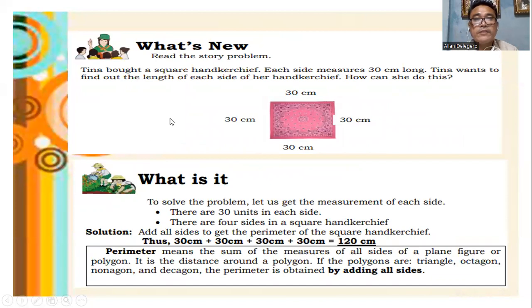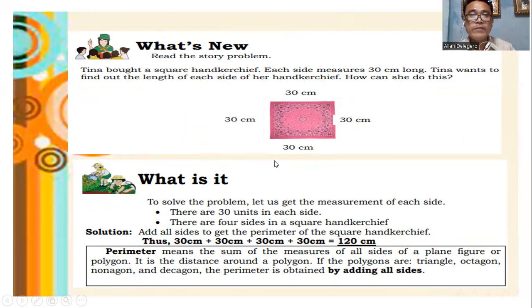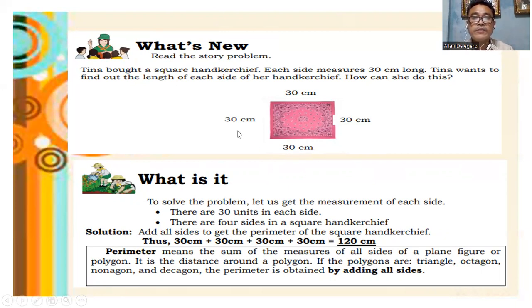Tina bought a square handkerchief. Each side measures 30 centimeters long. Tina wants to find out the length of each side of her handkerchief — how can she do this? To solve the problem, we get the measurement of each side: there are 30 units in each side, and there are 4 sides. To get the perimeter, you add all the sides: 30 plus 30 plus 30 plus 30 equals 120 centimeters.